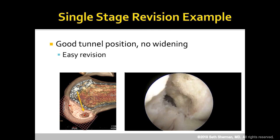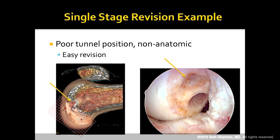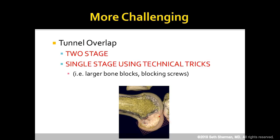Good bone stock and a posterior tibial tunnel make this a good, easy single-stage revision. Here we can see very poor, non-anatomic tunnel position — again a fairly straightforward single-stage revision. However, when your 3D CT shows tunnel overlap, this is either a two-stage solution or gets more technical. You can do single-stage but need larger bone blocks, blocking screws, and the like — a topic for a different day.